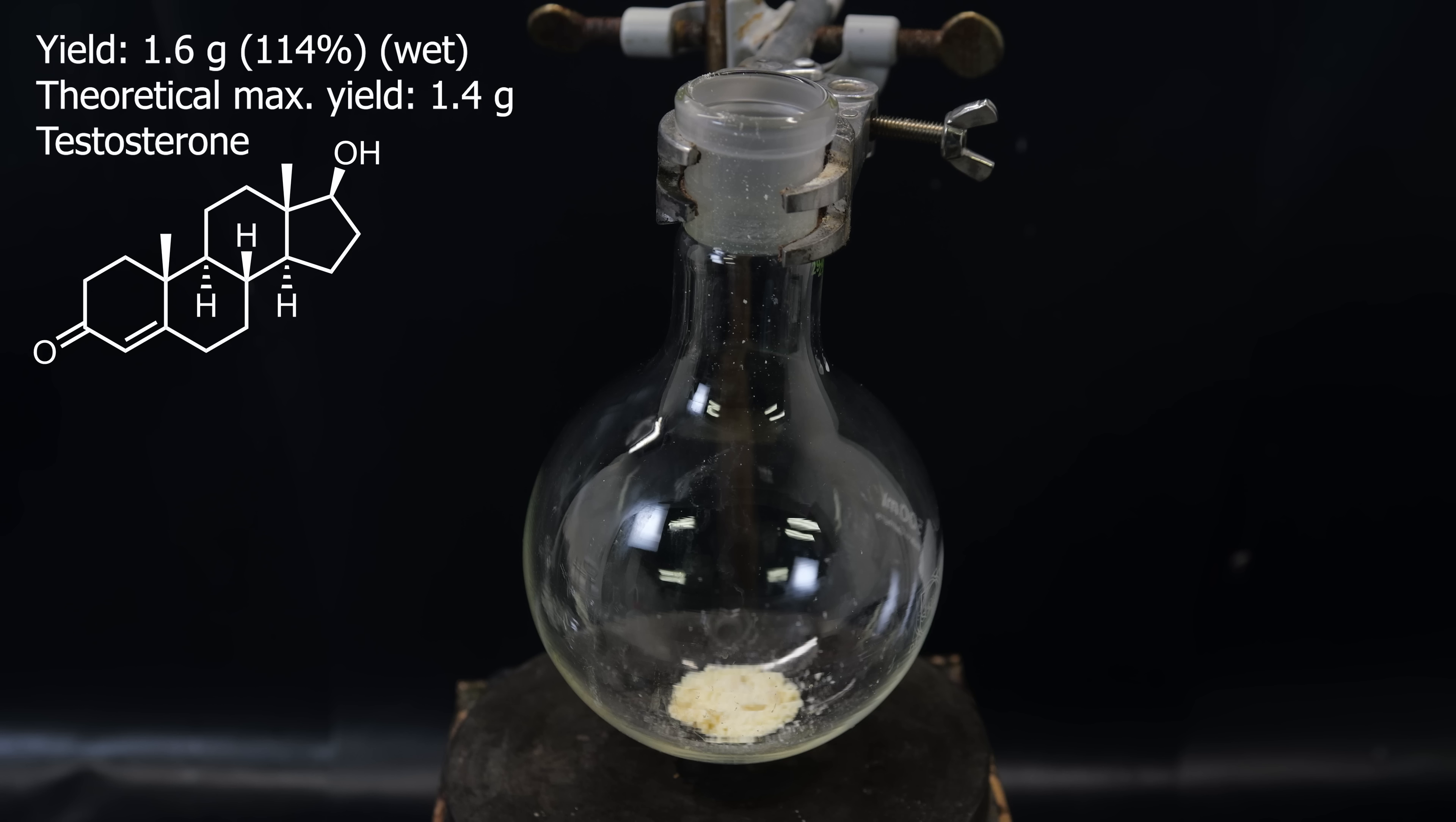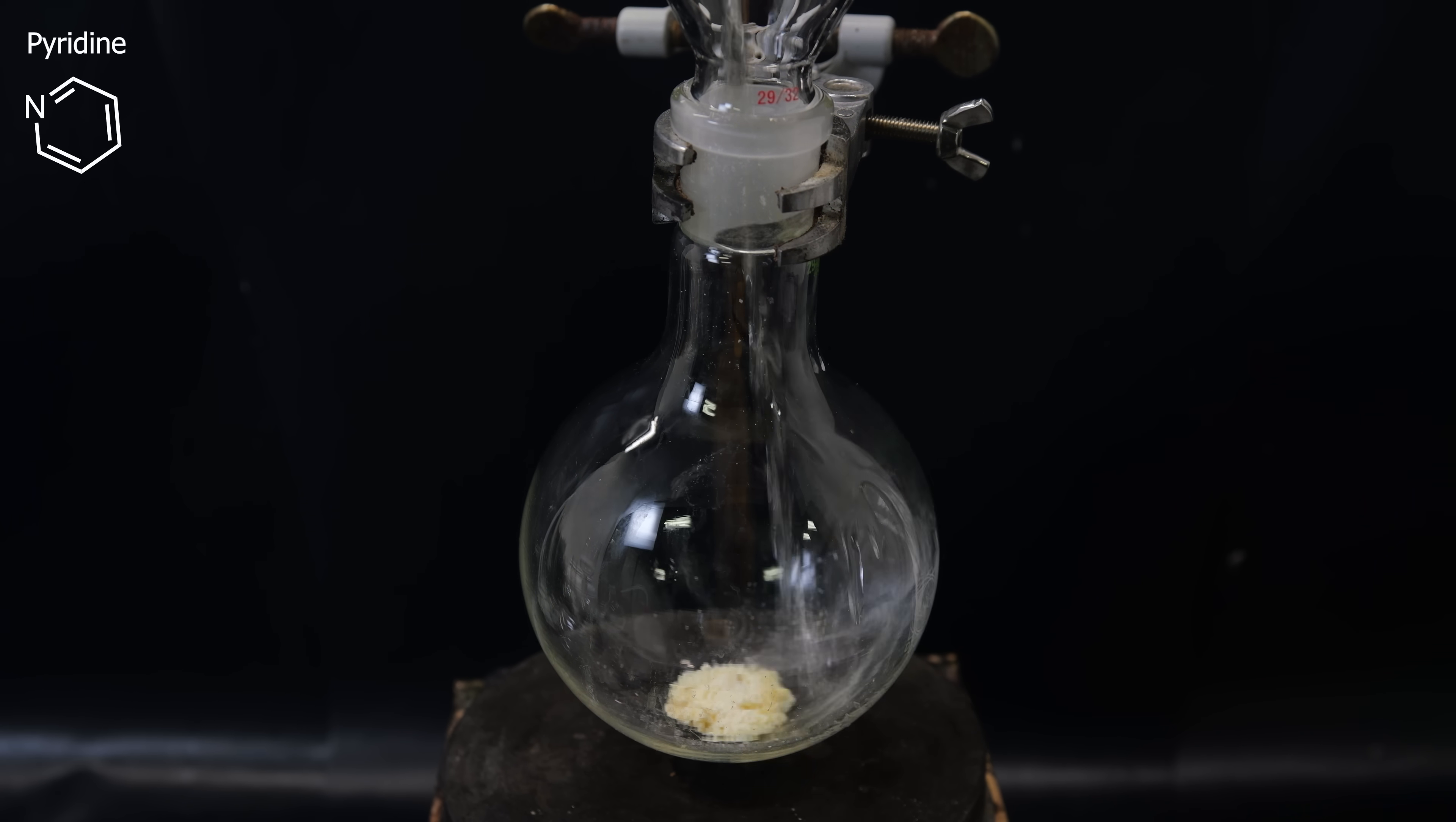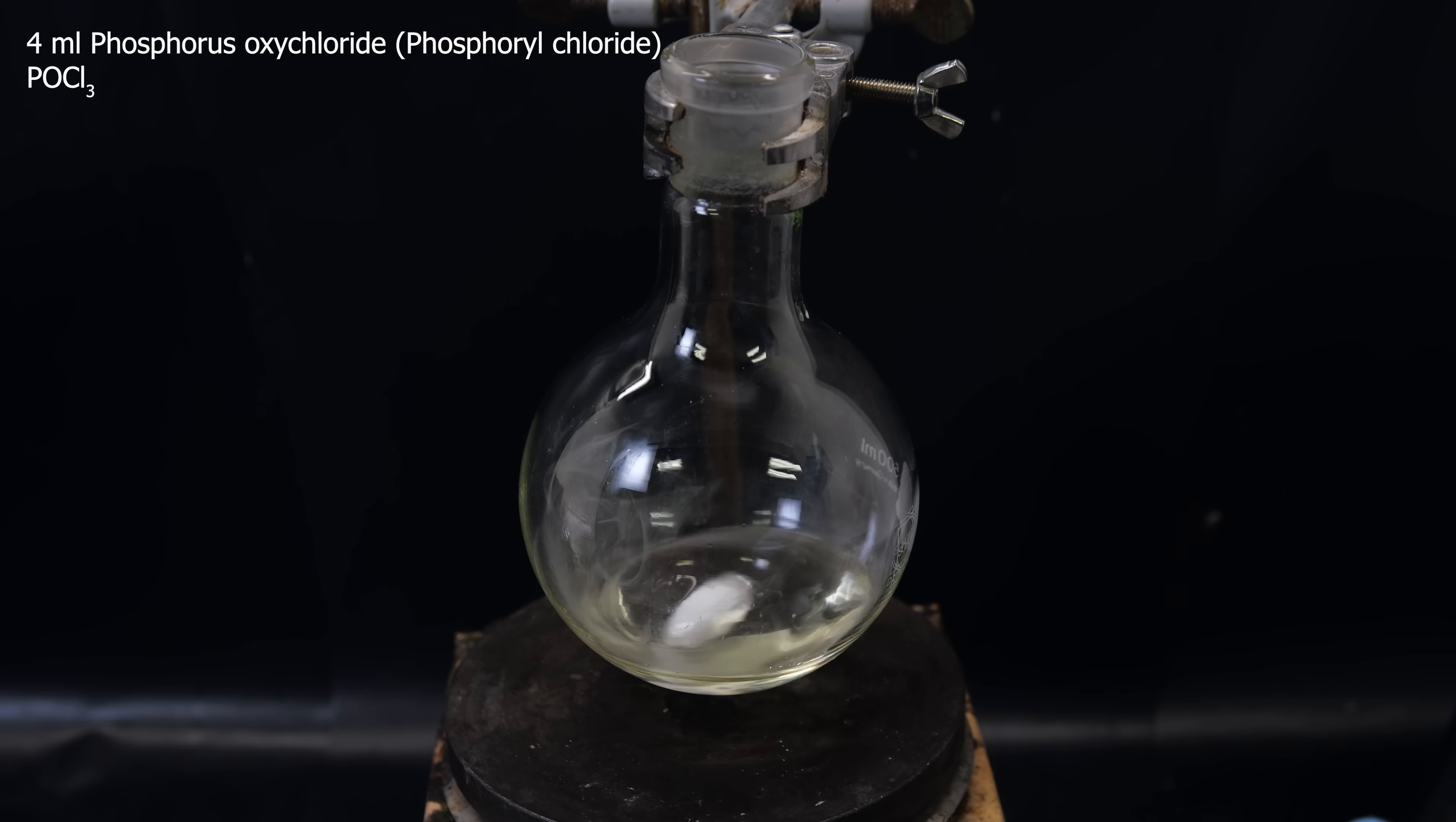For the next reaction, I will dissolve all of the testosterone, into the base pyridine. I used that to wash out the dish, with the remaining material, and I aimed for about 20 to 40 mls, but I don't know how much exactly I put in. I then allow it to stir and dissolve, and when that's done, I take out the reagent phosphorus oxychloride, of which I pipette 4 mls directly into the pyridine.